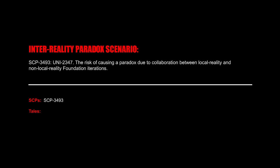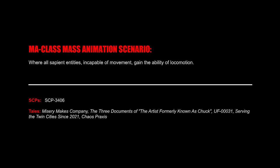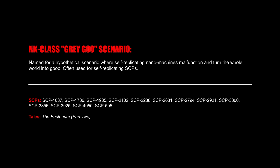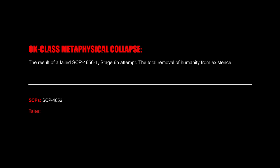LK Class Species Transmutation Scenario: An event that genetically alters humanity as a species in some way. MA Class Mass Animation Scenario: Where all sapient entities incapable of movement gain the ability of locomotion. MH Class Large-Scale Aggressor Overrun Scenario: An event where SCP-3534-3 enters our universe and kills us all. NK Class Gray Goo Scenario: Named for a hypothetical scenario where self-replicating nanomachines malfunction and turn the whole world into goop.